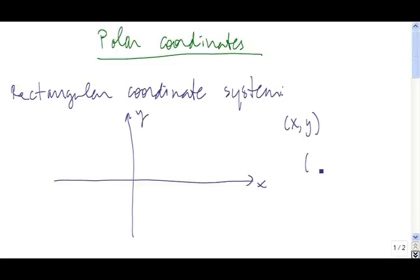So to get to the point (1, 3), we go over one unit in the x direction and then up three units in the y direction.